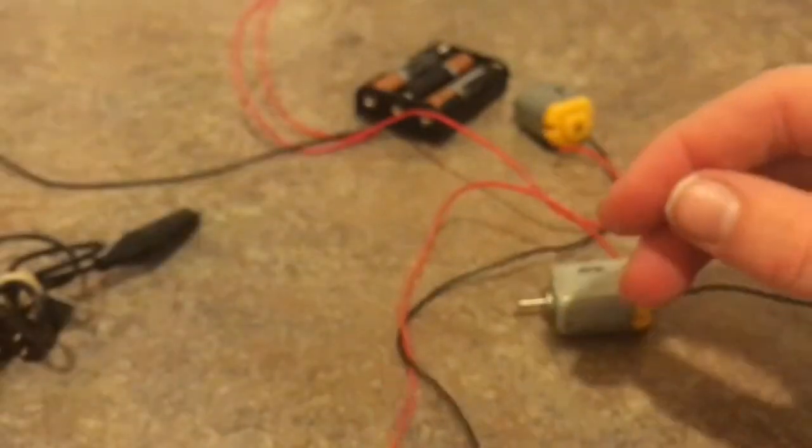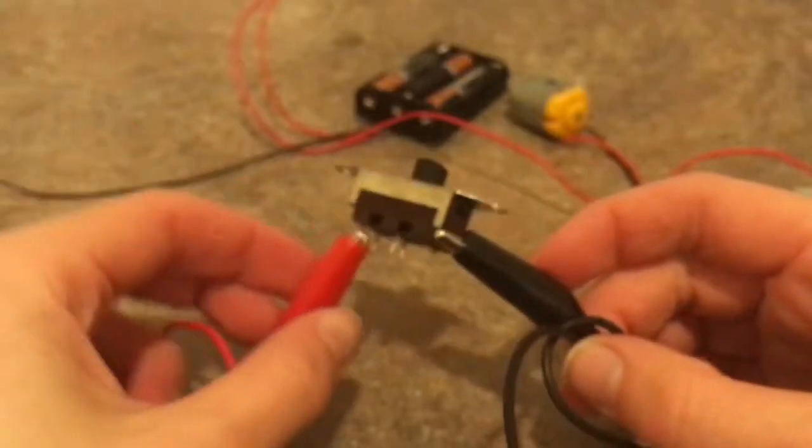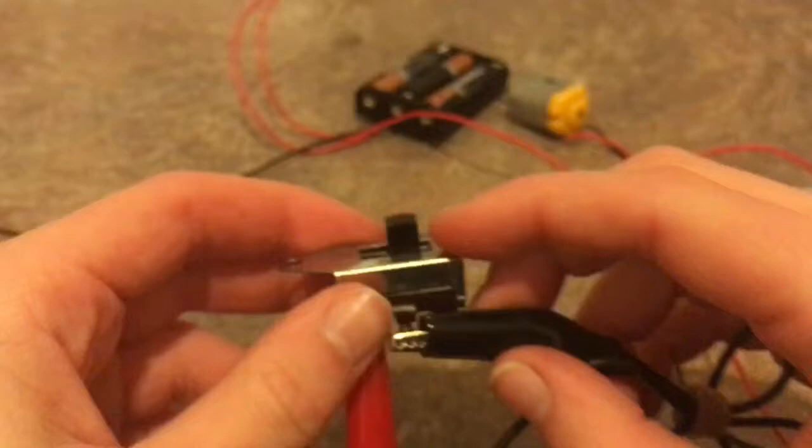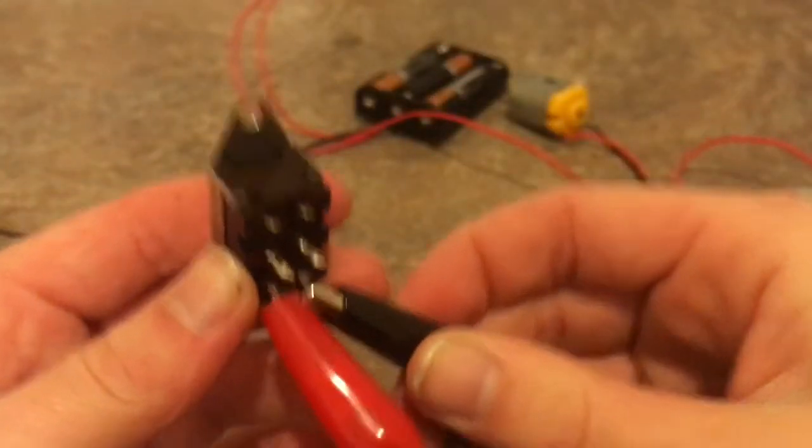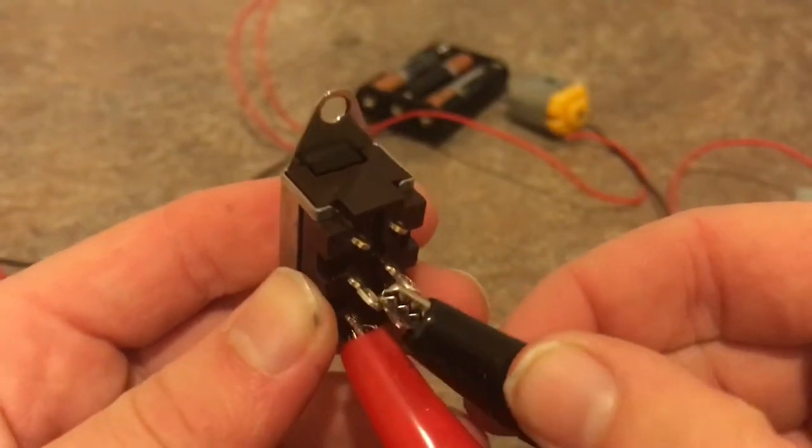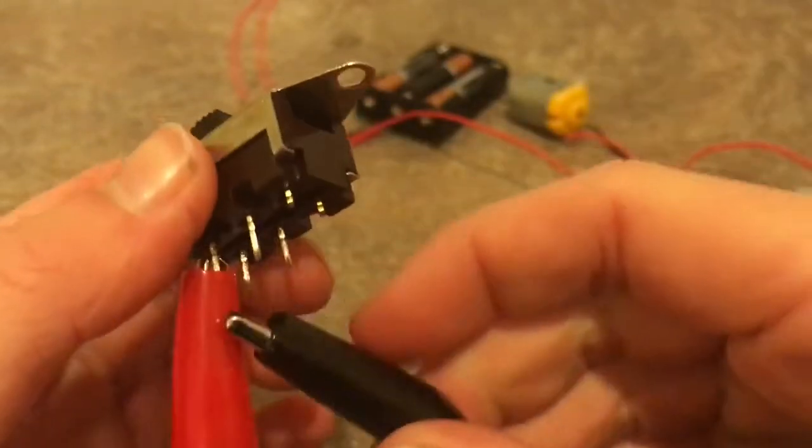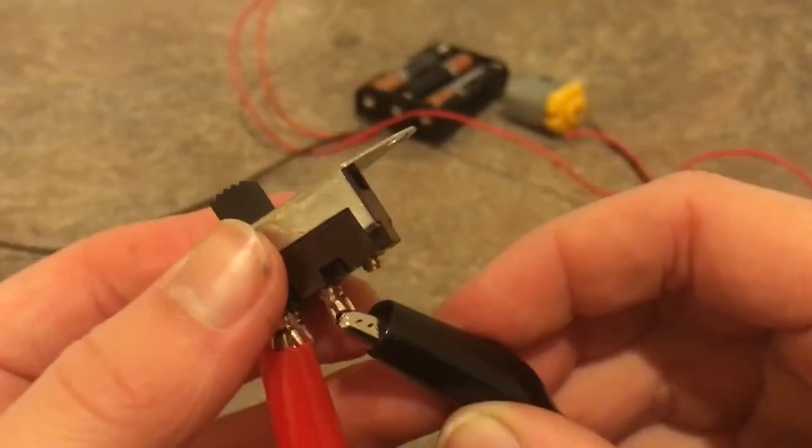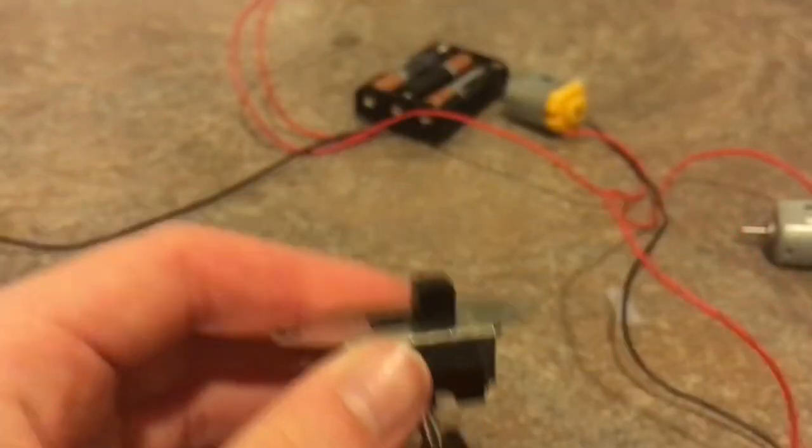Now once you've done that, the only connection that you don't have is this alligator clip to this switch. What you want to do, I say this in all my videos, this is the easiest way: you just want to touch this metal part of the alligator clip to each one of these. Nothing happens, so you just want to switch the switch. That's making the motor spin, so just want to clip it onto there and switch off.